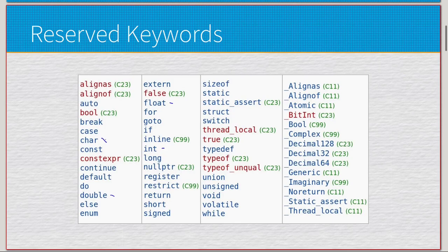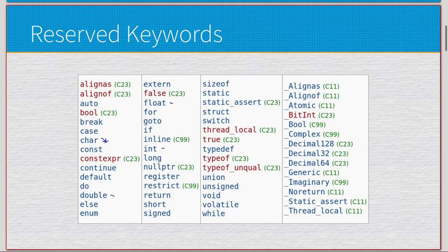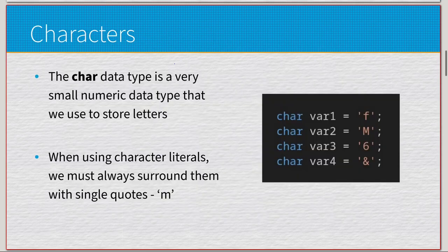For this one we're going to focus on char. You'll notice that string is technically not listed as a reserved keyword. There is a reason for that. Things are going to be known as strings, and when it comes to printing data out they're going to be called string literals, even though they aren't a data type and don't have a reserved keyword. They have their own entire library, which we'll go over in a bit.